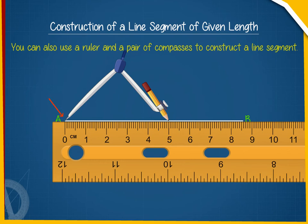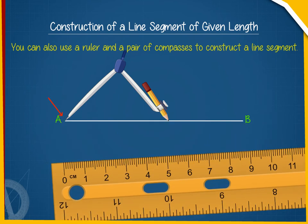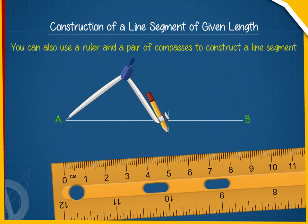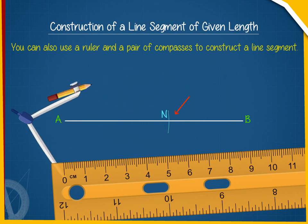place the metal end on A and draw an arc with the pencil end cutting the line segment AB at N. You will get AN as the line segment of length 5 cm.